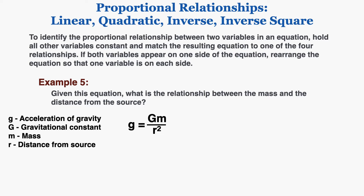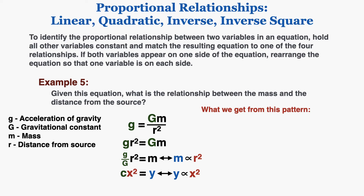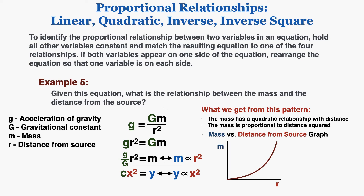Finally, example five: given this equation, what is the relationship between mass and distance from the source? Holding lowercase g and capital G constant and rearranging to get mass by itself, the equation fits the form y = kx², so y is proportional to x squared. Mass is proportional to r squared — mass has a quadratic relationship with distance — and the graph of mass versus distance from the source fits a quadratic pattern.